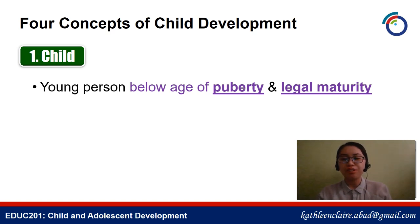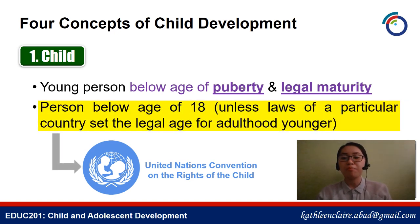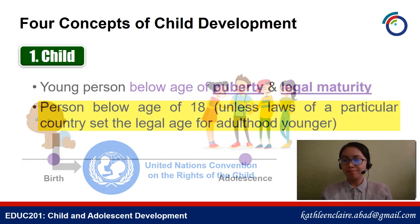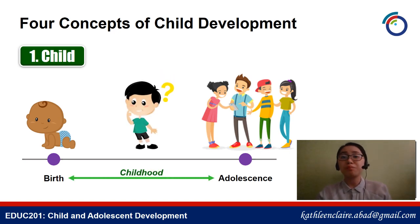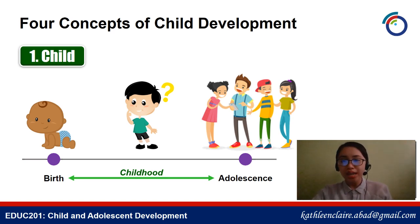According to the United Nations Convention on the Rights of a Child, a child is a person below the age of 18, unless the laws of a particular country set the legal age for adulthood younger. Here in the Philippines, the legal age is 18 — once you turn 18, you are no longer a minor, same as in the US. However, in other countries, it can be younger or older depending on what has been set. Childhood is the period between birth and adolescence.